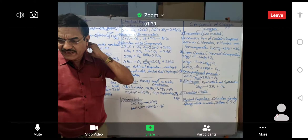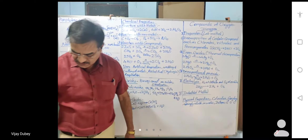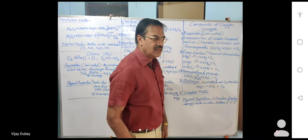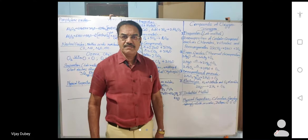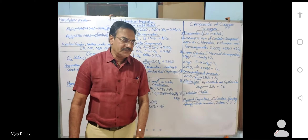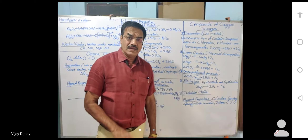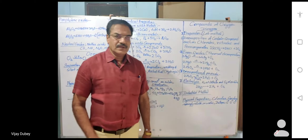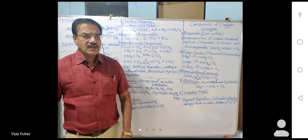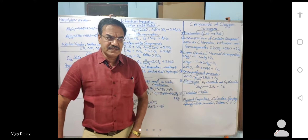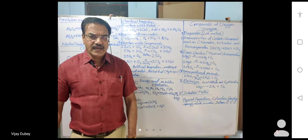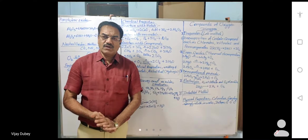Good evening, dear students. Welcome back to P-Block Elements. We are talking about chemistry of group 16 elements — oxygen, sulfur, selenium, tellurium, and polonium. We have seen so far the electronic configuration, some basic reactivity, anomalous behavior of oxygen, physical properties, chemical properties and reactivity — with oxygen, hydrogen, halogen, and metals. We had also seen oxidation states.